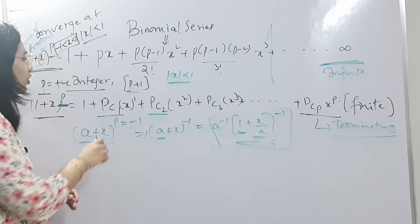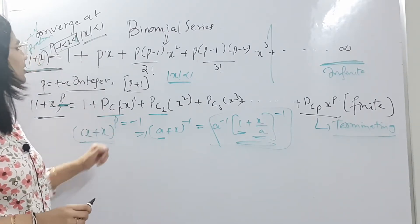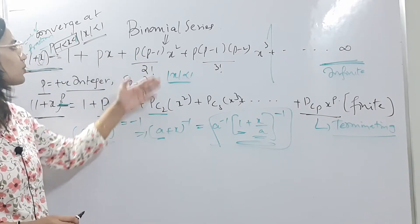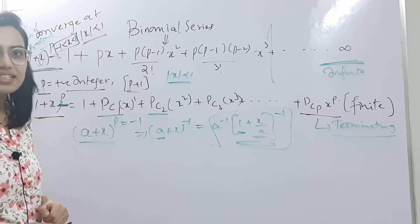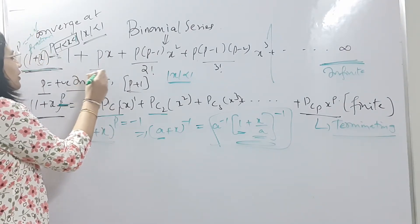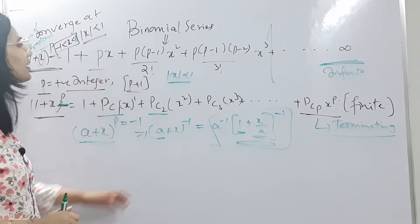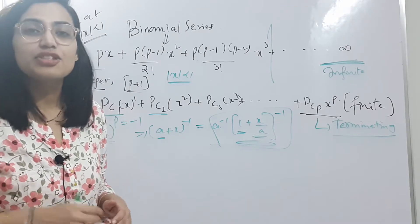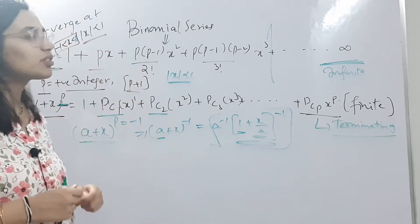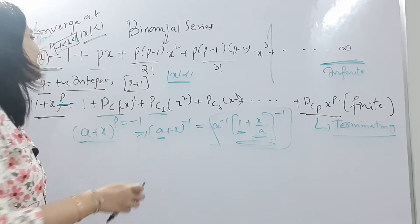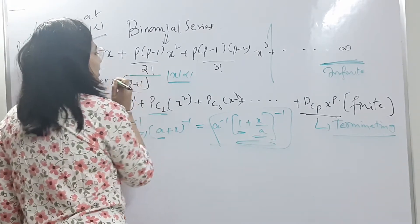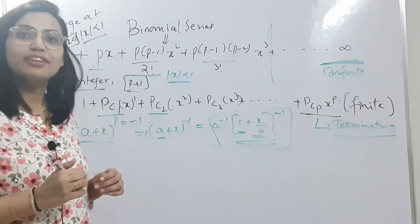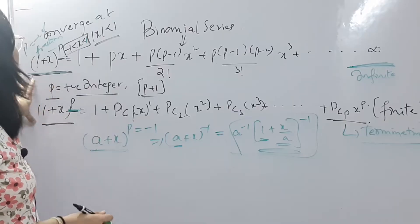One more important observation: for all positive powers we can express the coefficients in the form of binomial coefficients — pC1 is just p, pC2 matches the second term, and so on. However, we cannot represent negative powers or fractions like −p, −1, −2, or −1/2 in the form of binomial coefficients. That is the reason the binomial series is written in its general form rather than using binomial coefficient notation.